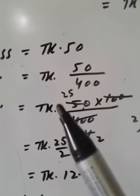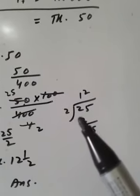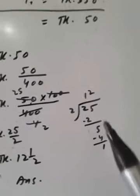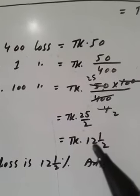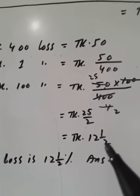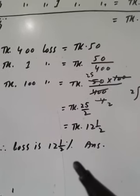Now 25 by 2. Make it in proper fraction. 25 divided by 2 is 12 whole 1 by 2. Therefore loss is 12 and a half percent.